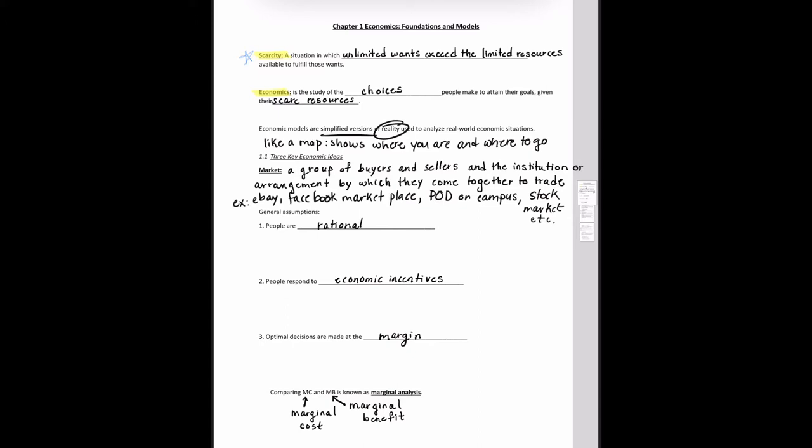When analyzing markets, we're generally going to make three separate assumptions. One, people are rational. Two, people respond to economic incentives. And three, optimal decisions are made at the margin.